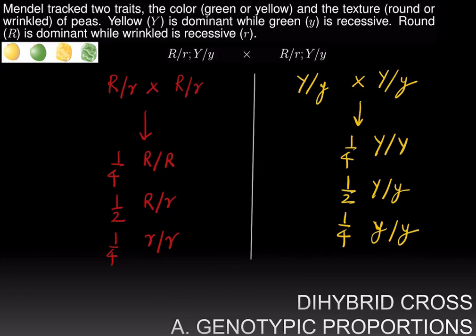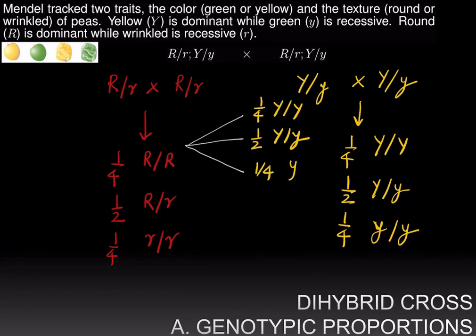When we are looking at the dihybrid trait, however, we will get all the possible combinations between the two traits. For example, you could have big R big R for the texture trait and then be big Y big Y for the color trait. You could be big R big R for the texture trait and big Y little y for the color trait, and so on.